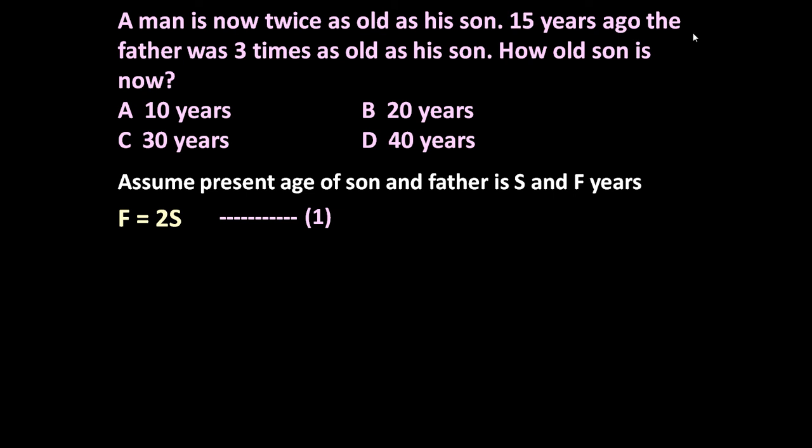Now another equation. 15 years ago, the father was 3 times as old as his son. Means 15 years ago, what was the age of father? F minus 15. Because present age of father is F, so 15 years ago his age was F minus 15.